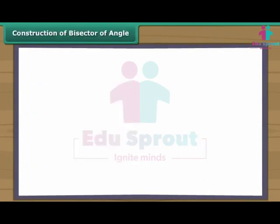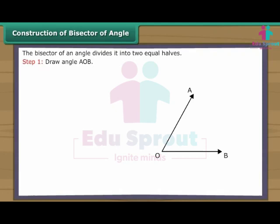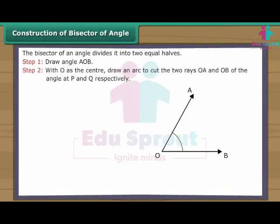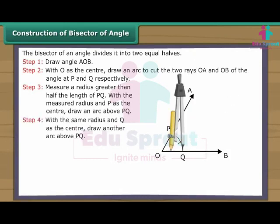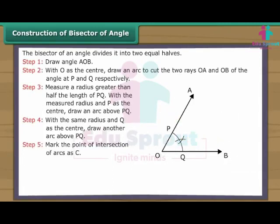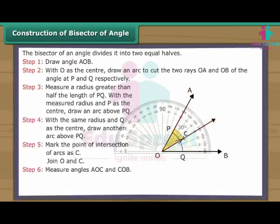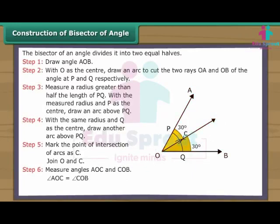Construction of bisector of angle. The bisector of an angle divides it into two equal halves. Let us learn to construct an angle bisector. Draw angle AOB. With O as the centre, draw an arc to cut the two rays OA and OB of the angle at P and Q respectively. Measure a radius greater than half the length of PQ. With the measured radius and P as the centre, draw an arc above PQ. Mark the point of intersection of arcs as C. Join O and C. Measure angles AOC and COB. Angle AOC is equal to angle COB. Therefore OC is the bisector of angle AOB.